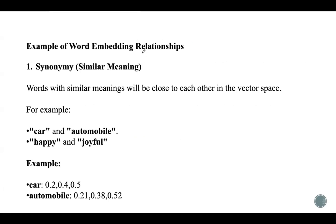An example of word embedding relationships is synonymy — words with similar meanings will usually be close to each other in the vector space. For example, 'car' and 'automobile' will have similar embeddings because they refer to the same thing. Similarly, 'happy' and 'joyful' are synonyms and will be close to each other in the vector space. You can see the vectors for 'car' and 'automobile' are quite close to each other because both words refer to the same concept — a vehicle.